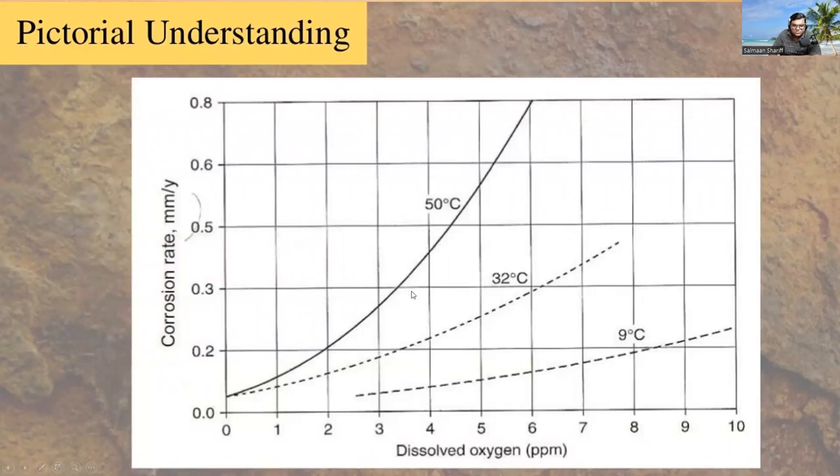the corrosion rate increases up to a rate of 0.8 millimeter per year and it varies with temperature like 50 degrees Celsius, 32 degrees Celsius, and 9 degrees Celsius which have different graphs as differentiated in the pointed graph.